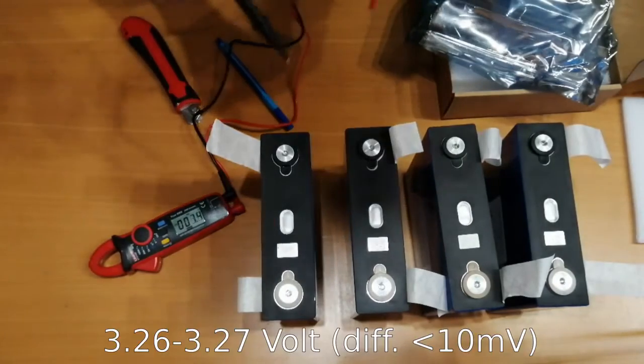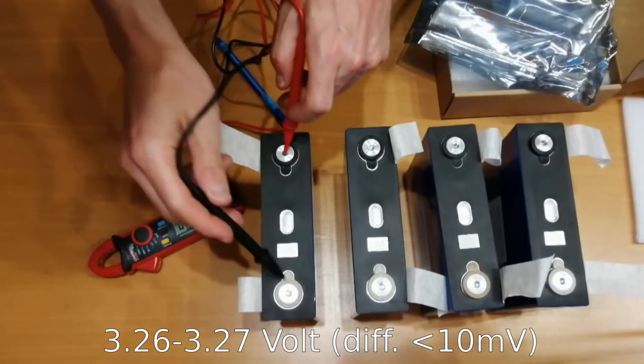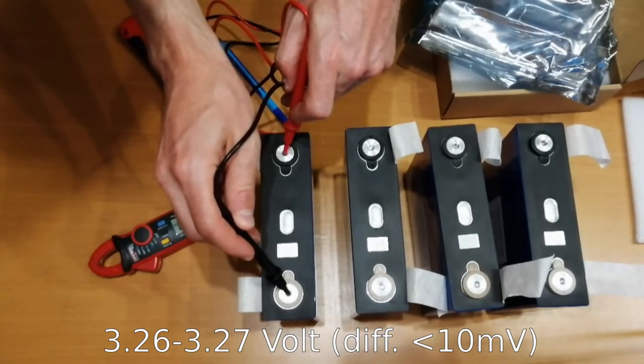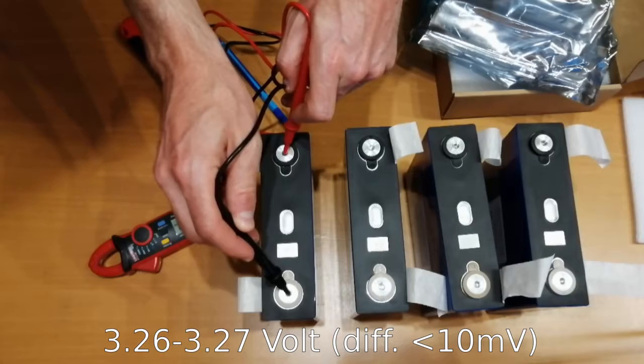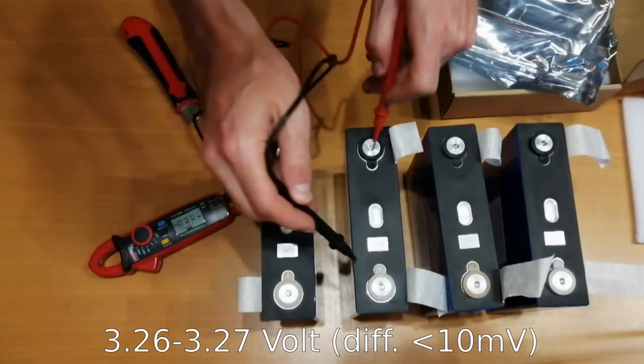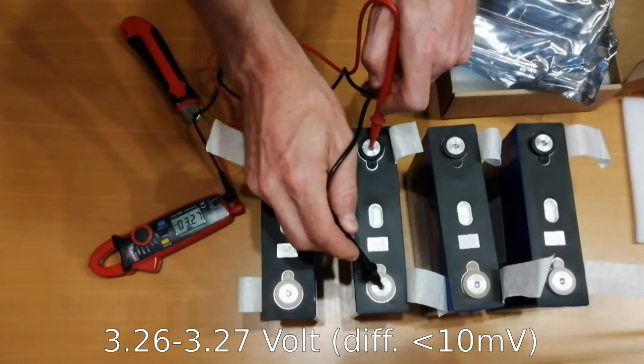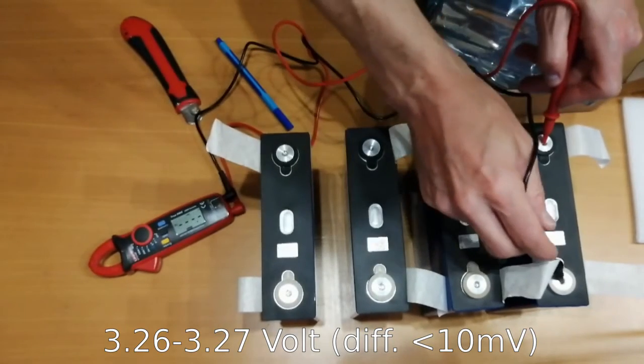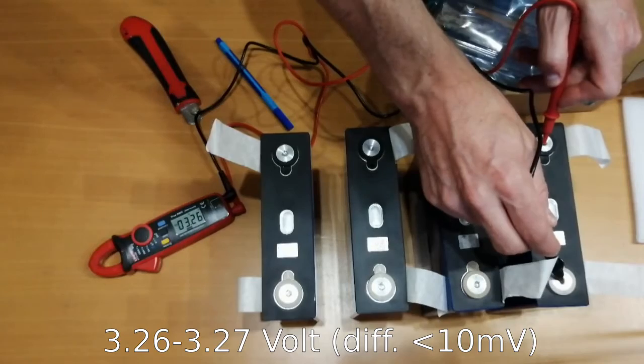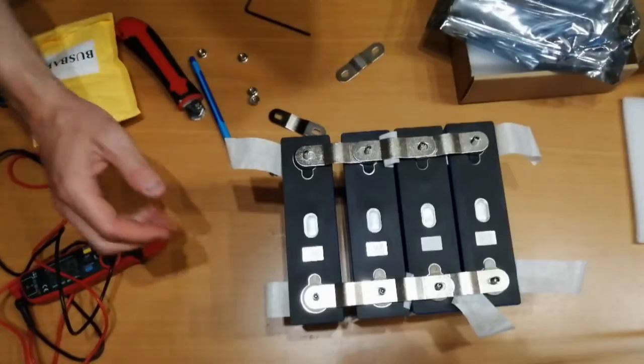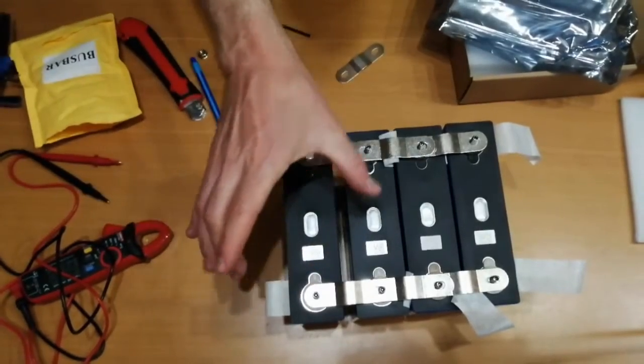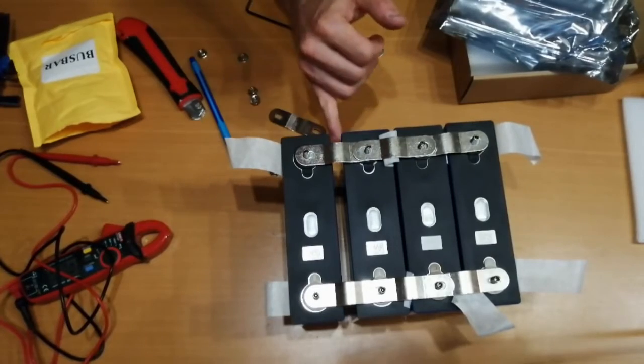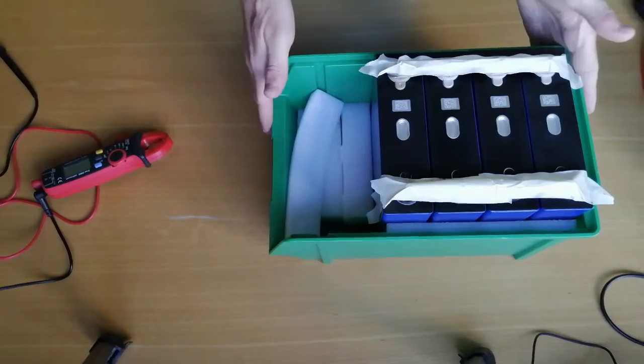But I think that shouldn't be a problem. I also quickly checked the voltage. Three of them were 3.27 and one at 3.26, so it's a difference of around 10 millivolts. That should be completely fine. And usually they're also matched and balanced by the company, so I hope that I wire them up in parallel and let them sit for a day and then hopefully they should be balanced.